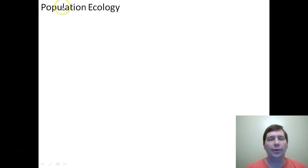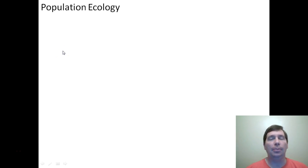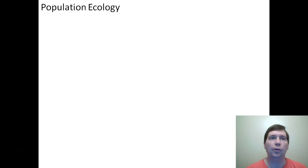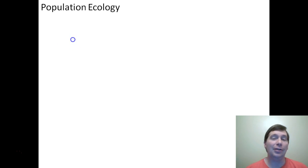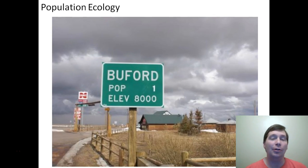Hi, it's Mr. Bennett and in this video we're going to talk about population ecology. When I say the word population, probably the first thing that comes to your mind is how big is the town. The population of Logan is 48,000. The population of Nibley is 5,900. If you go to certain places in Wyoming you can find some extreme examples.